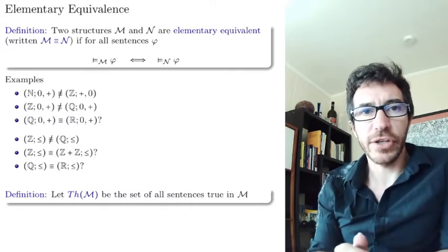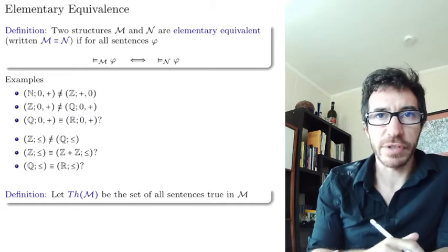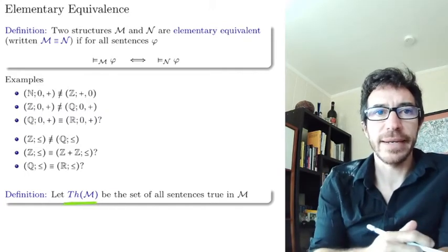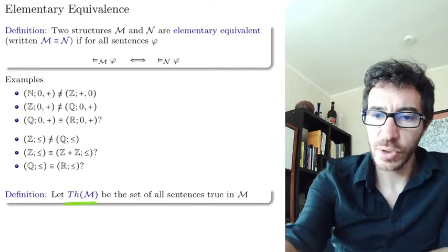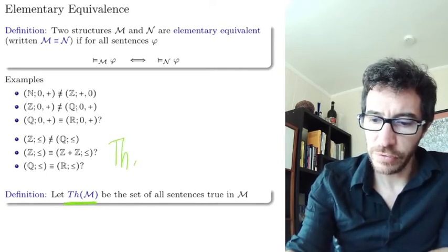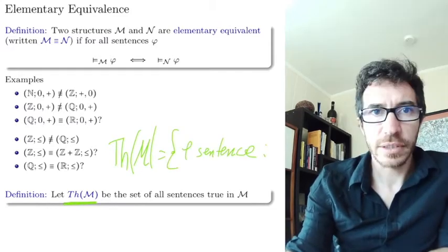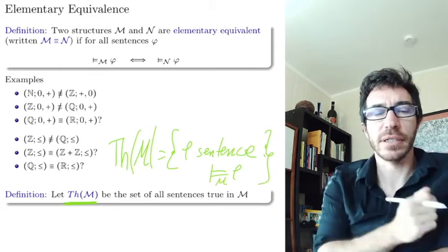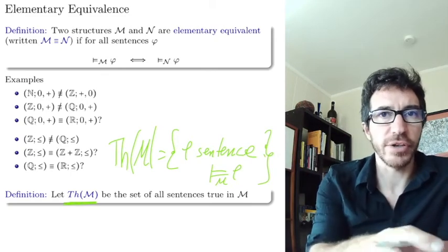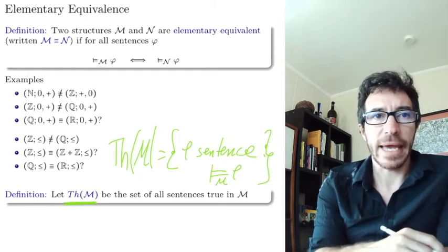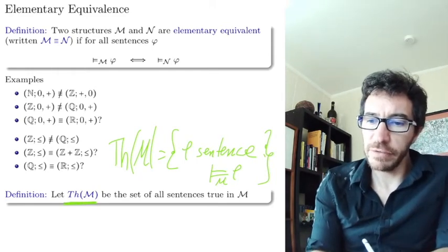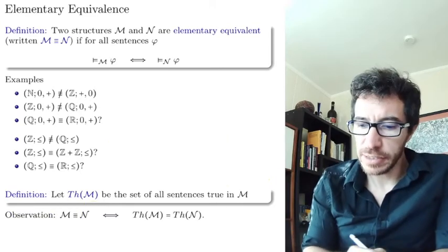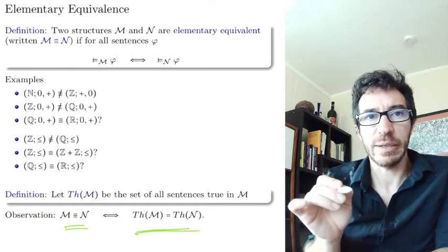One more definition before we end the video. If you have a structure M, we use the notation Th(M) — theory of M — to mean the set of all the sentences that are true in M. So the theory of M is the set of all sentences phi such that phi is true in M. Being elementary equivalent is exactly the same thing as having the same theory — the same set of sentences true about M is the same as the set of sentences true about N.